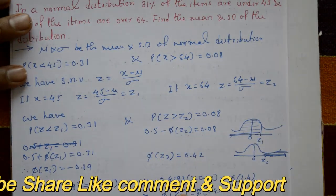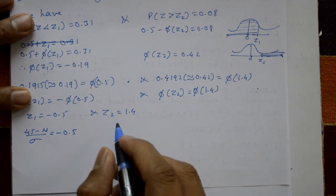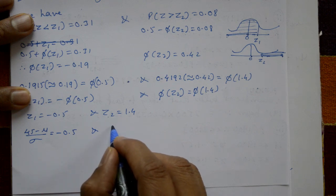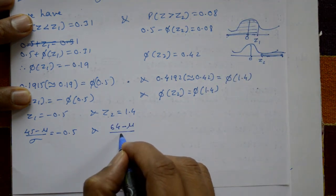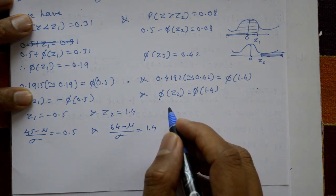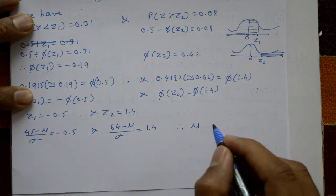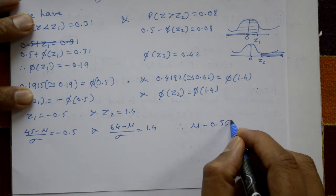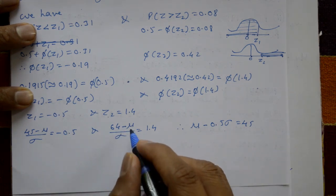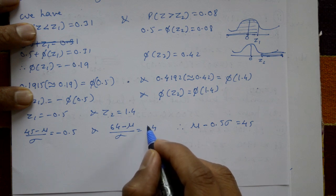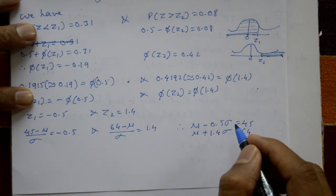Substituting Z1 and Z2: the first equation is (45 minus mu) divided by sigma equals minus 0.5, and the second equation is (64 minus mu) divided by sigma equals 1.4. Cross-multiplying and rearranging gives: mu minus 0.5 sigma equals 45, and mu plus 1.4 sigma equals 64.